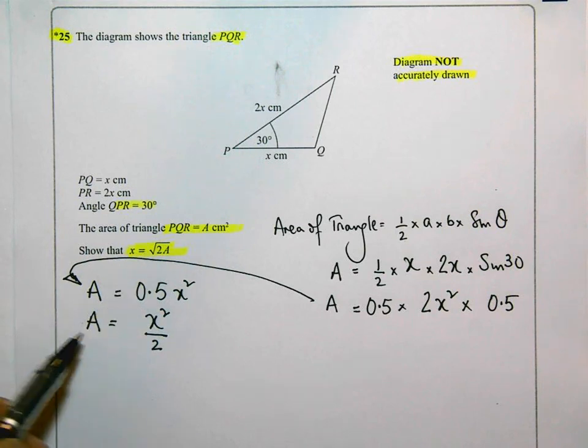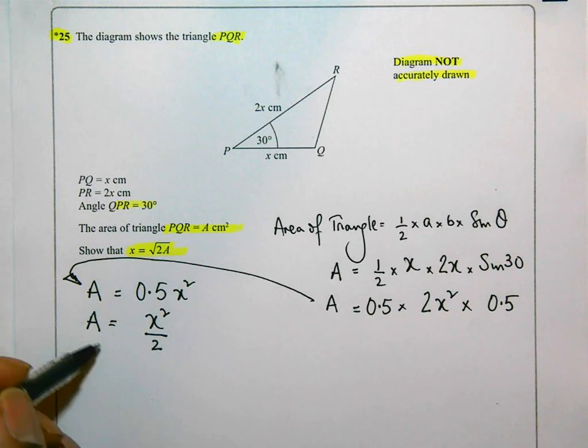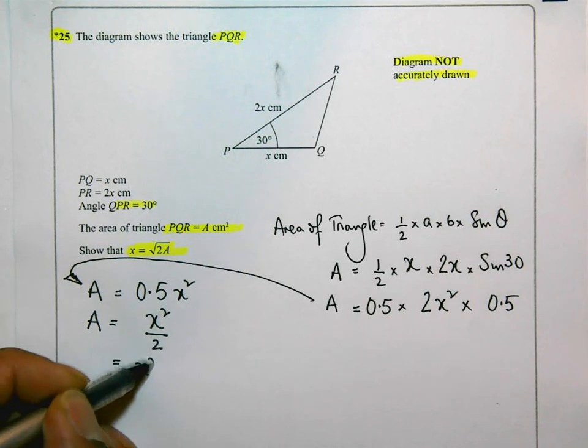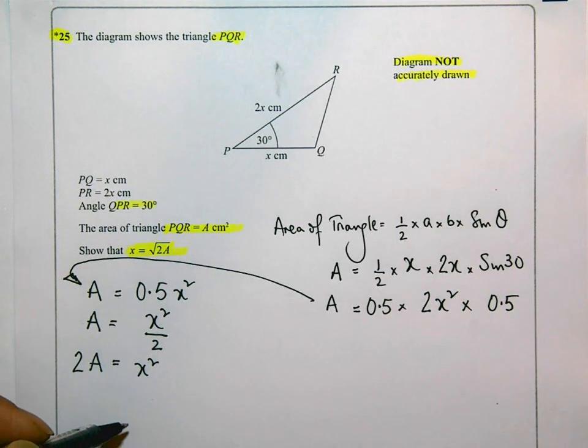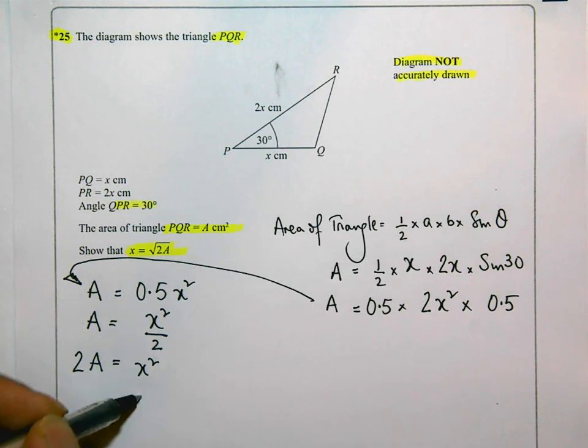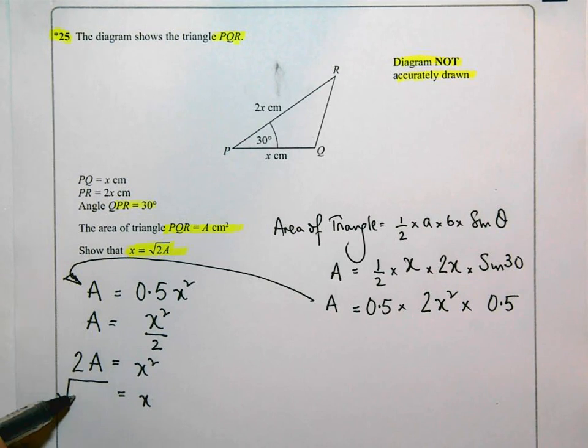I'm going to get rid of that 2 at the bottom by timesing by 2. So if I get rid of that 2, I'll just get left with X squared. And then A times 2 is 2A. To work out what X is, I need to square root this side. So the square root of 2A is what I'll get.